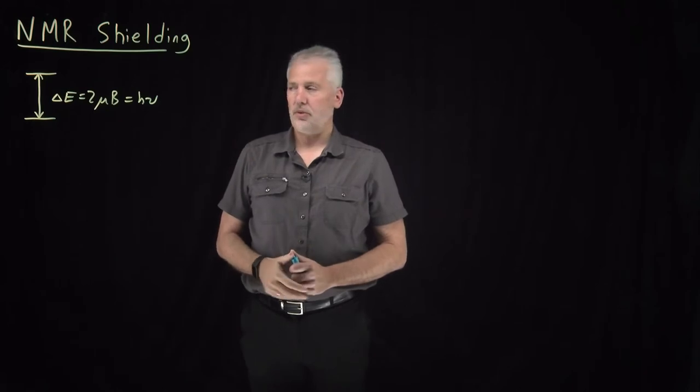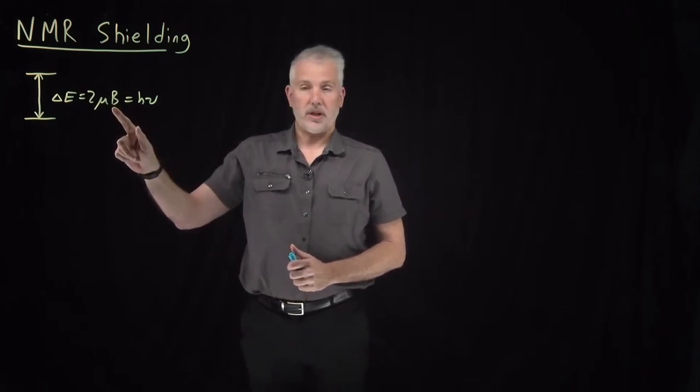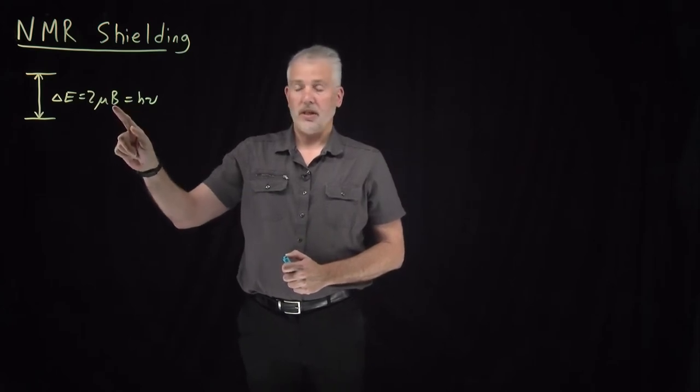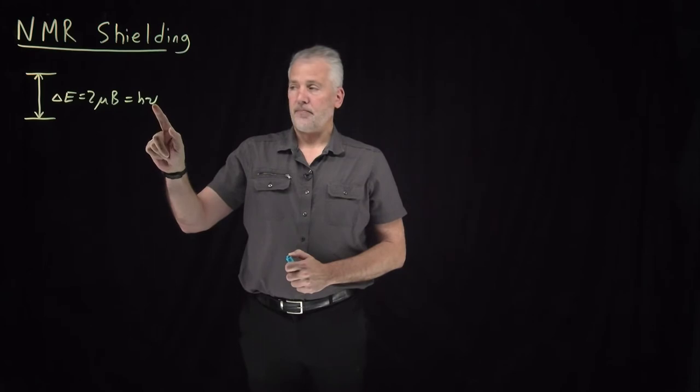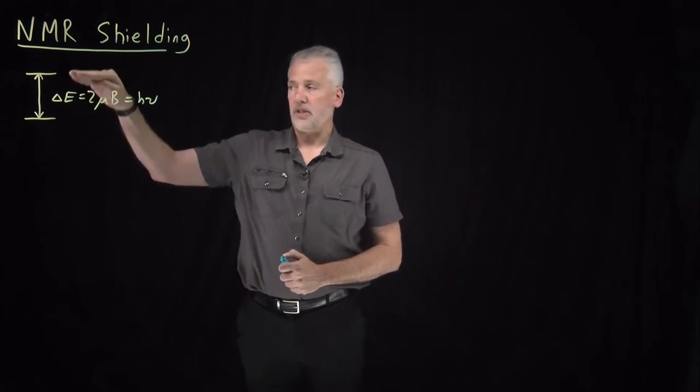A straightforward application would be to apply a magnetic field, stick a hydrogen atom near a large magnet which generates a magnetic field, and then you can predict the frequency that you would need to use to make a nucleus transfer from one of these nuclear spin states to the other.